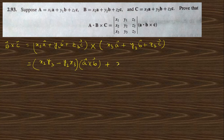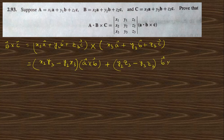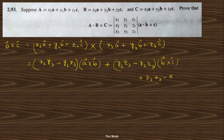For the a cross c terms: c cross a gives two terms. For b cross c we get (y2·z3 − y3·z2) times (b cross c vector). For c cross a we get (z3·x2 − x3·z2) — wait, correcting: (z2·x3 − x2·z3) times the c cross a vector.